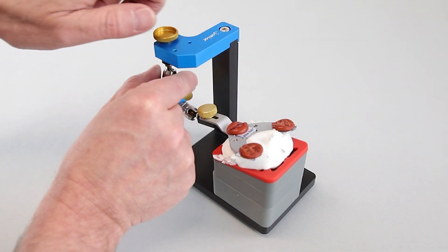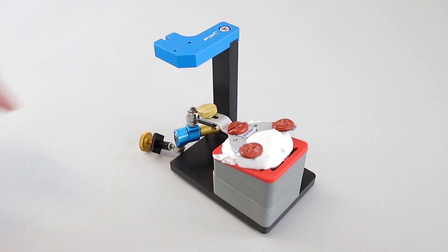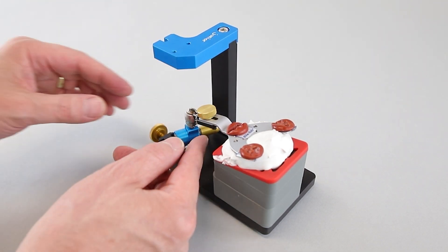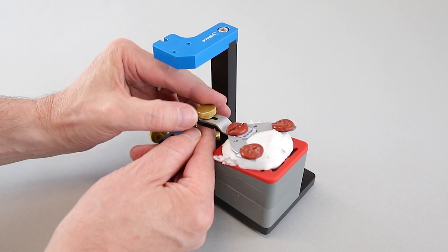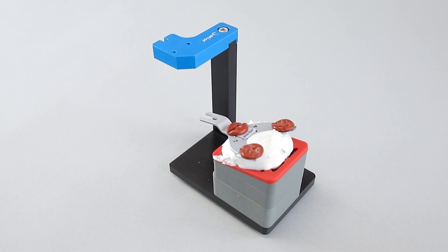After the plaster is hardened, you can remove the 3D joint support. First, open the fixation nut. Then open the upper fixing screw. Finally, open the fixation screw from the bite fork and remove the joint support from the Transfer Stand.